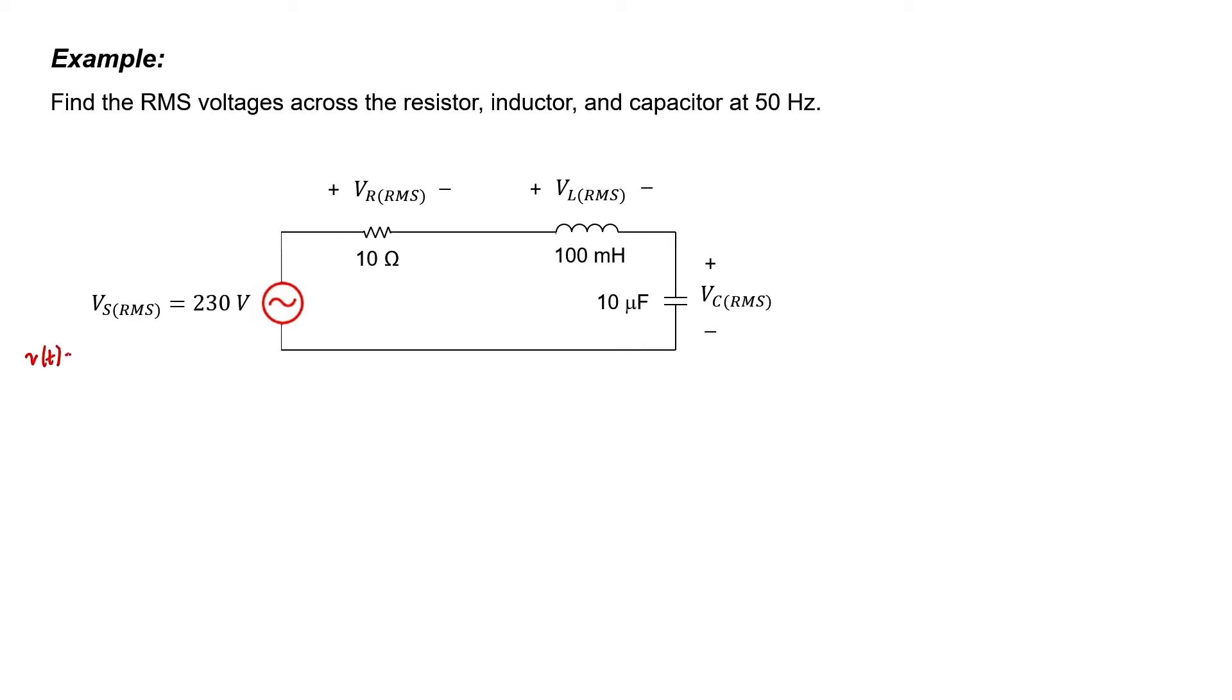Since we're given the RMS at the source, I know that the amplitude should be 230 times the square root of 2 volts. I'm faced with a problem if I try to write the phase. Should I write 0 degrees? Should I write 45 degrees? Should I write 90 degrees?